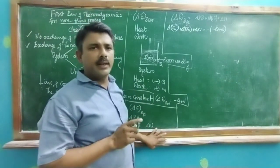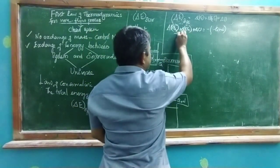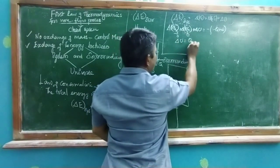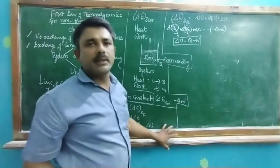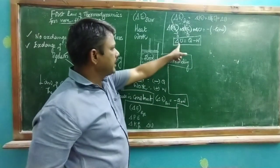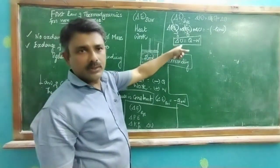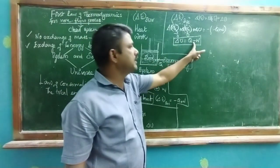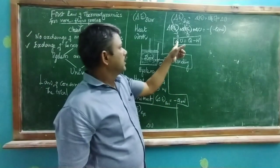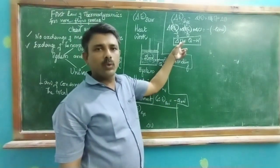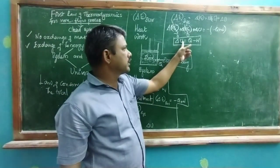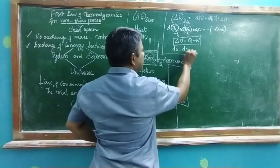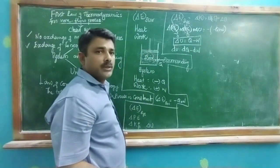For a steady-state non-flow process, there is no role for potential energy and there is no role for kinetic energy. Hence, this equation becomes ΔU = Q − W. This is the mathematical representation of the First Law of Thermodynamics for non-flow processes. In differential form, dU = dQ − dW.